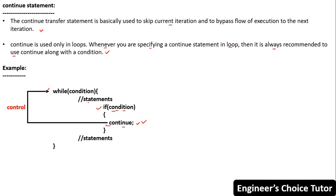You might expect that after the continue statement, the next statement in the current iteration should execute before moving on. But when continue executes and the condition is true, the current iteration is skipped — execution got as far as the continue statement, then the control goes to the next iteration. The control never reaches any statements after the continue in that iteration; those statements will not execute. This is the role of the continue statement.